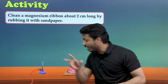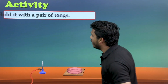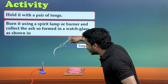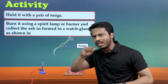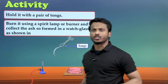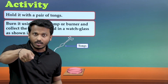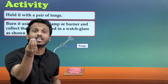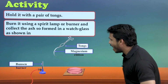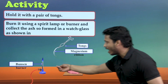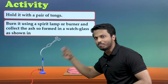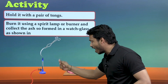This is a Bunsen flame and this is a watch glass. Hold the magnesium ribbon with a pair of tongs — burn it using a spirit lamp or burner and collect the ash in the watch glass. So here is our Bunsen burner, this is the magnesium ribbon held with tongs, and let me start to burn it.